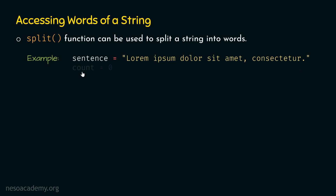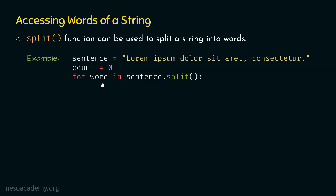This is how our for statement looks like: 'for word in sentence.split()'. Here, we are using sentence.split() to split this string into words. Eventually, we will get a list of words, and those words will be provided to the word variable one at a time. Inside this for loop, we just need this statement: 'count += 1'. After accessing a word, we increment the count. So after accessing the word Lorem, count is incremented by one, and so on. In this way, we would be able to count the words of the sentence.